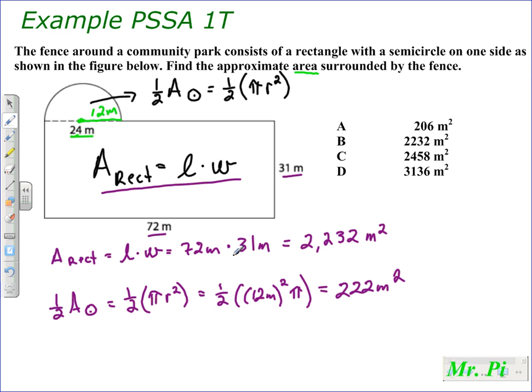And we need to find the total area here. So to do that, we'll need to add these numbers. I did say 226 but wrote 222. 2 plus 6 is 8. 3 plus 2 is 5. 2 plus 2 is 4. And 2 plus nothing is 2. So the total area surrounded by the fence is 2,458 square meters, which the correct choice here is C.